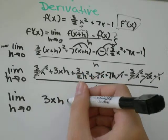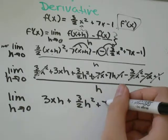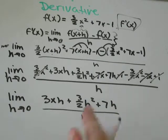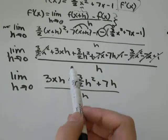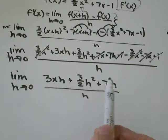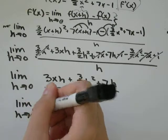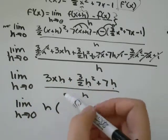We've got 3xh plus 3 over 2 h squared plus 7h, all divided by h. So what we're going to do now is see if these numbers and variables on the top have anything in common. And they do. They all have an h in them, so I'm going to factor out the h.